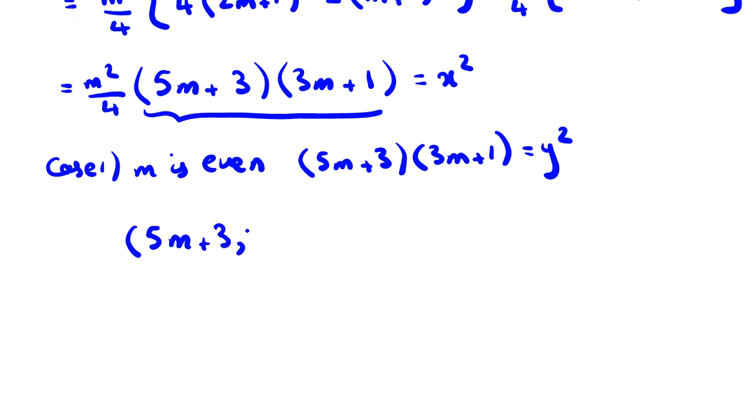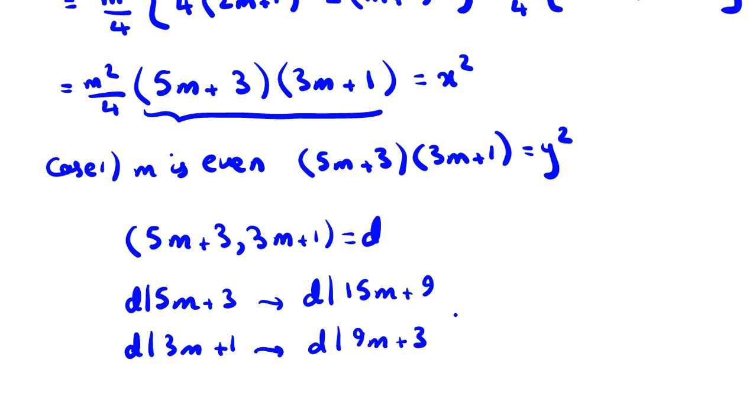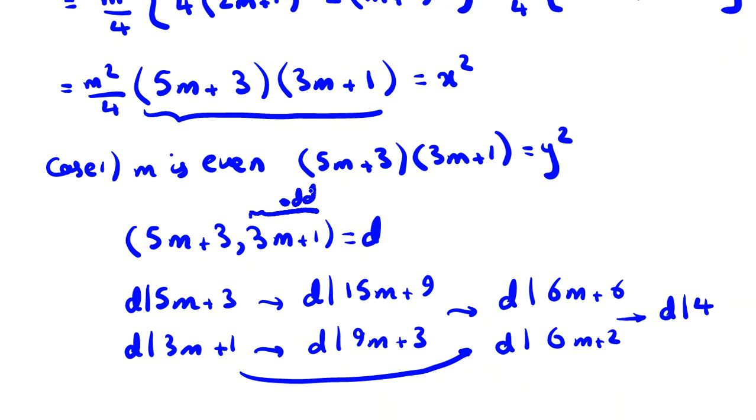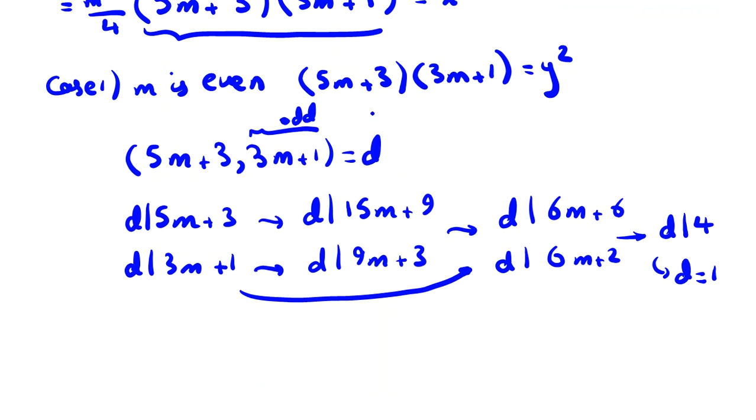Suppose gcd of 5m+3 and 3m+1 is d. d divides 5m+3 and d divides 3m+1. If you multiply by 3: 15m+9 and 15m+3, so the subtraction d will be 6m+6. And if we multiply 3m+1 by 2: 6m+2. So d divides 4. And d can be 1 or 2 or 4. But m is even so these are odd. So we understand d should be odd.